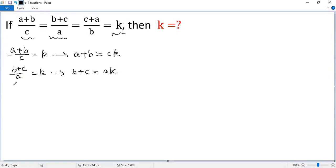Similarly, c plus a over b equals k. Both sides multiplied by b, we get c plus a equals b times k.